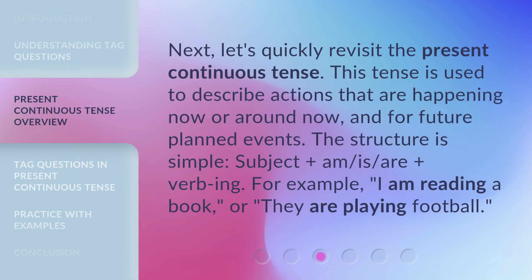Next, let's quickly revisit the present continuous tense. This tense is used to describe actions that are happening now or around now, and for future planned events. The structure is simple: subject plus am, is, or are, plus verb-ing. For example, 'I am reading a book,' or 'They are playing football.'